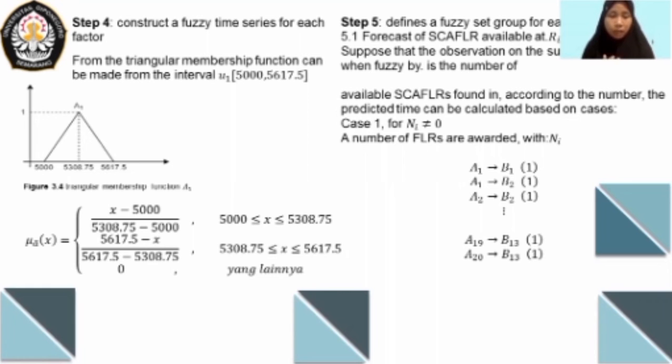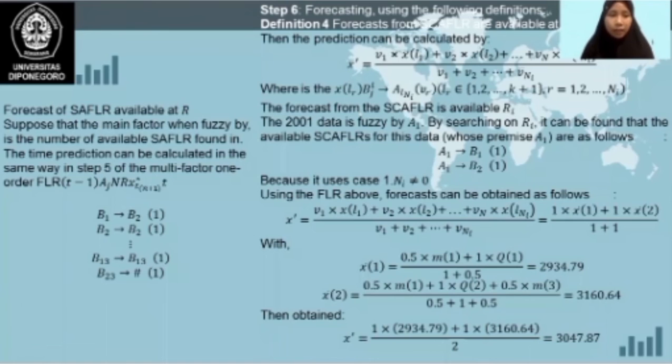Step number five is to define a fuzzy shape group for each factor with two kinds of FLRs. There is SCAFLR, as we can see on the screen—suppose that observation on the main factor when fuzzy A_i is the number of available SCAFLR founded. And then FLR number two is SCAFLR available at R.